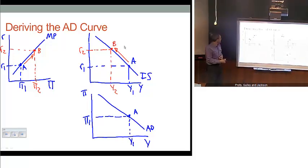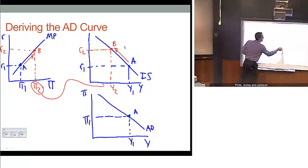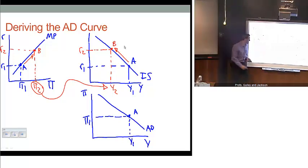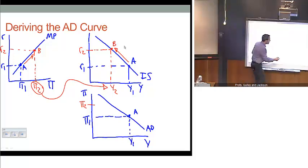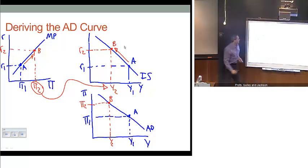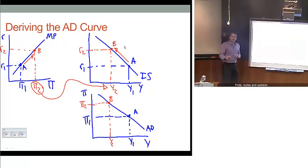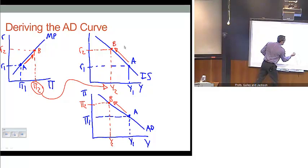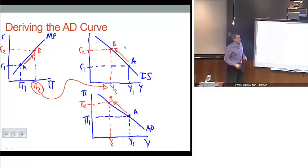You can see the connection between what we just did and how that translates to our goods market equilibrium. Inflation went up from PI1 to PI2. As a result of these mechanisms, the amount of output demanded — our goods market equilibrium level of output — declined from Y1 to Y2. We have this inverse relationship between the inflation rate and the aggregate amount of output demanded. As we move up from A to B along these various curves, that's how we construct our notion of aggregate demand graphically.